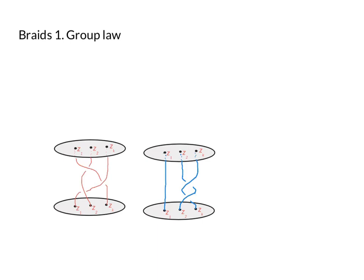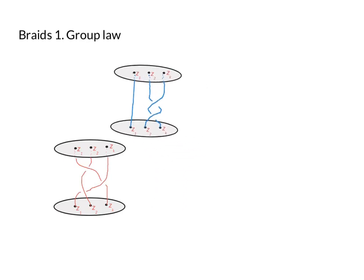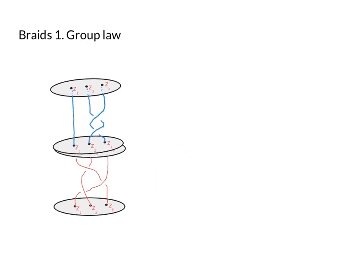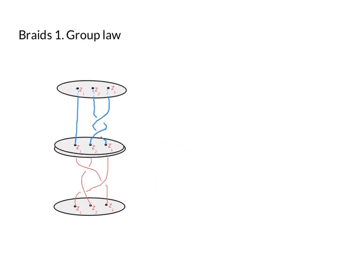And then I'm going to take another braid, this blue one, different braid starting and ending though at the same k points z_1 up to z_k, and I'm going to move it and sit it on top of the red braid.